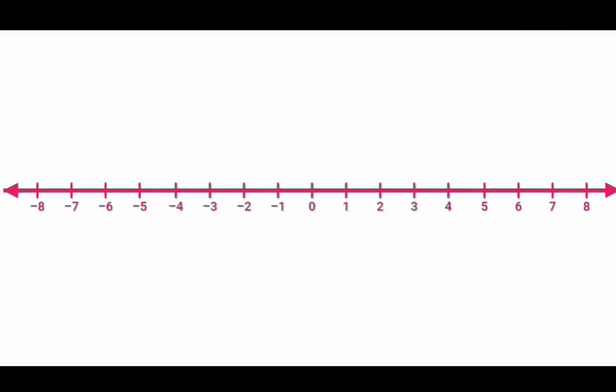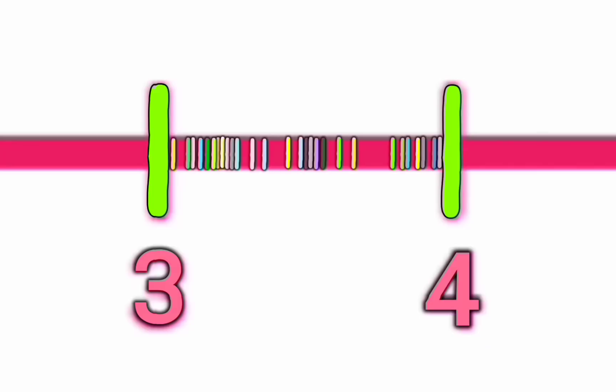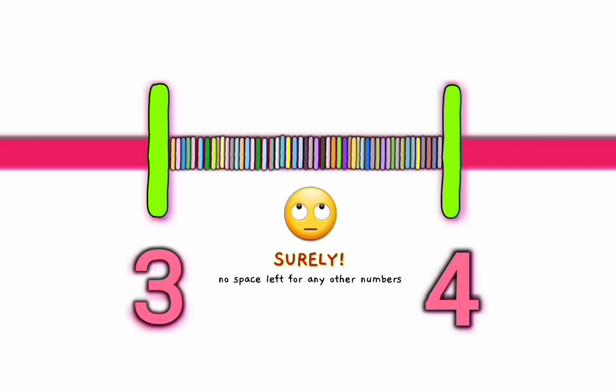Rational numbers are everywhere along the number line. However close you look, there will be millions and millions more. Surely, there is no space left for any other numbers. But unfortunately, this assumption is wrong.